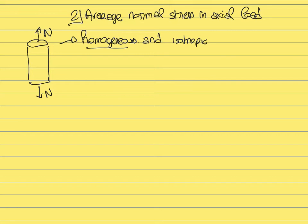We are not considering composite materials — we are considering metals that are homogeneous, where the properties are the same everywhere throughout the member. We are also considering that this material is isotropic, which means the properties do not depend on the direction along which you are looking. For example, in the case of wood, the properties along the direction of the fibers versus orthogonal to the fibers would be different — that is an example of a material that is not isotropic. Here we consider the material to be both homogeneous and isotropic.